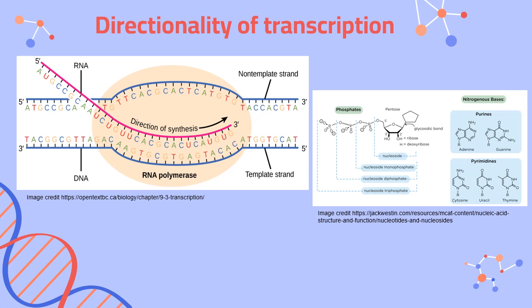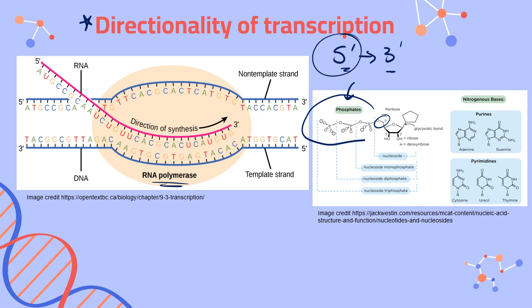Just like we have directionality in DNA replication, we also have that directionality in transcription, and it's the same directionality. We are still going in a 5 prime to 3 prime direction, and the reason is the same. We have those phosphate groups attached to carbon number 5 in our RNA nucleotides. The RNA polymerase will use those energy stores in the phosphate groups to bind together each of those nucleotides in the growing strand of messenger RNA — going 5 prime to 3 prime.